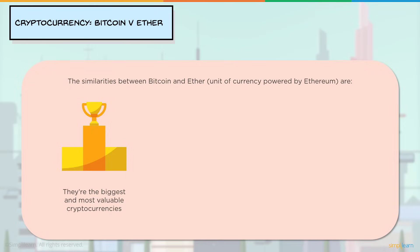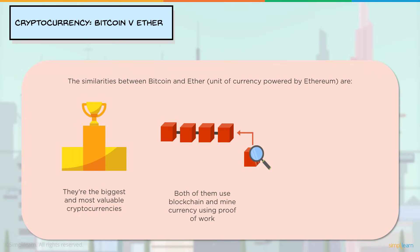The similarities between Bitcoin and Ether: they are the biggest and most valuable cryptocurrencies in the market. Both use blockchain technology — a technology involving transactions being added to a container called a block, creating a chain of blocks in which data cannot be altered. Currency is mined using proof-of-work, a form of mathematical puzzle that must be solved before a block can be added to the blockchain. Both are widely used across the world.